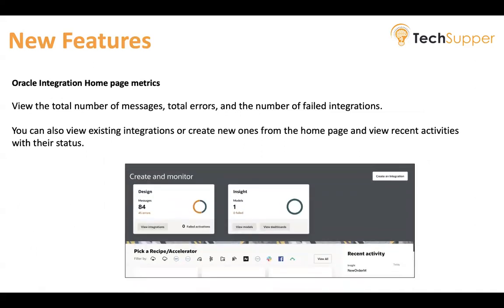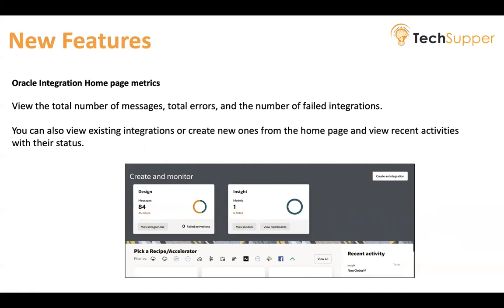The Oracle Integration Homepage metrics have changed. The homepage now shows the total number of messages received, the total errors received, and the number of failed integrations. You can also view existing integrations or create new ones from the homepage using the 'Create an Integration' button — so you don't need to navigate away. Clicking it takes you directly to the integration page where you can create the integration. You can also view all recent activities with their status.